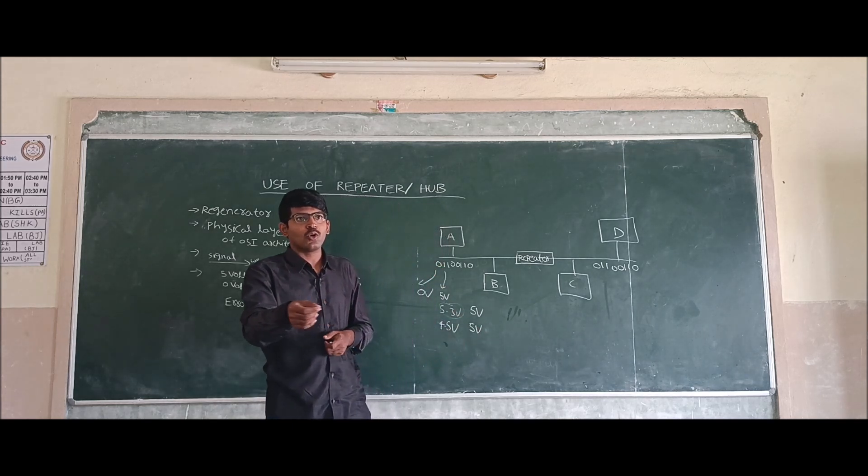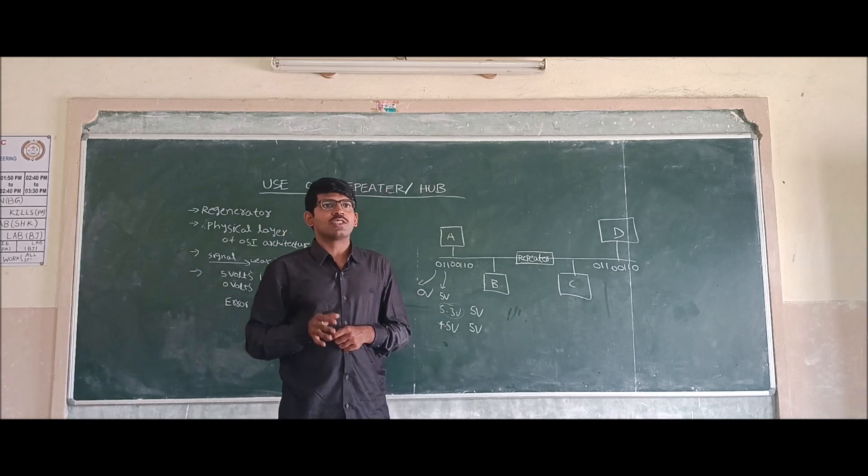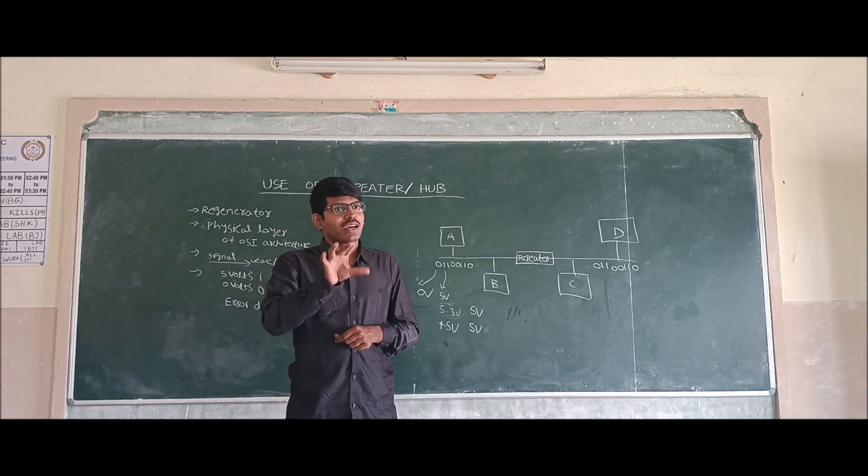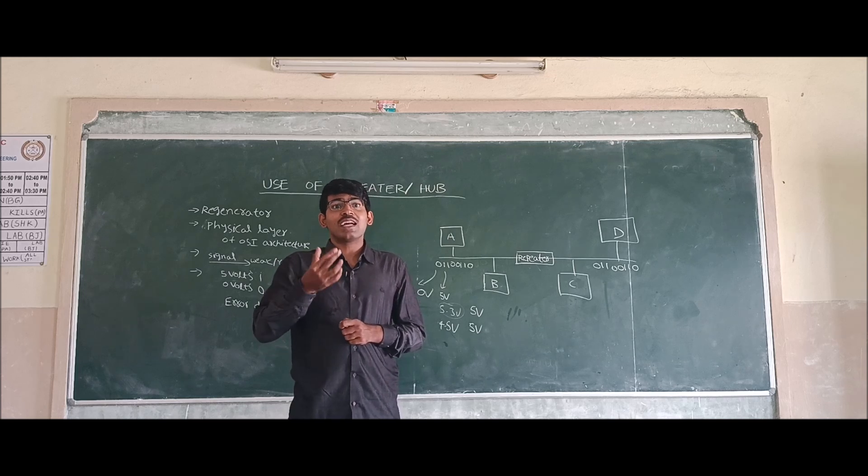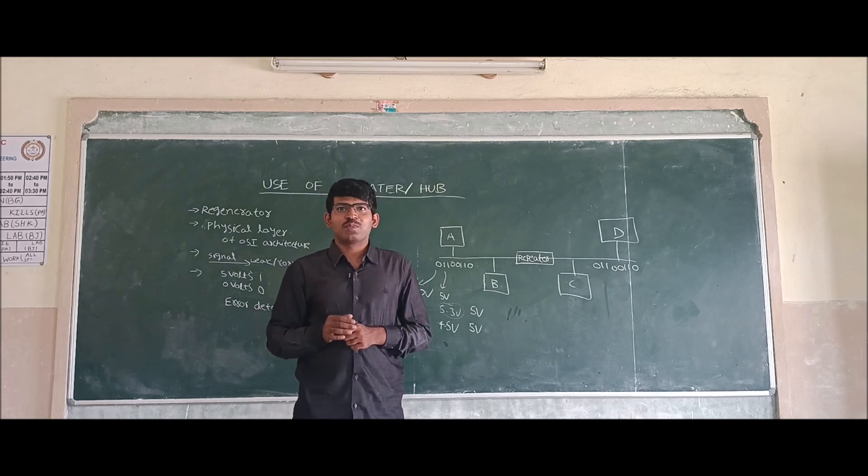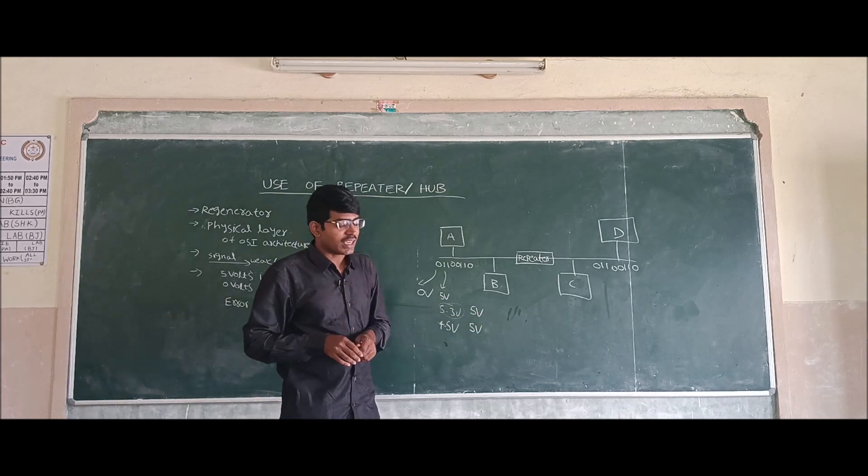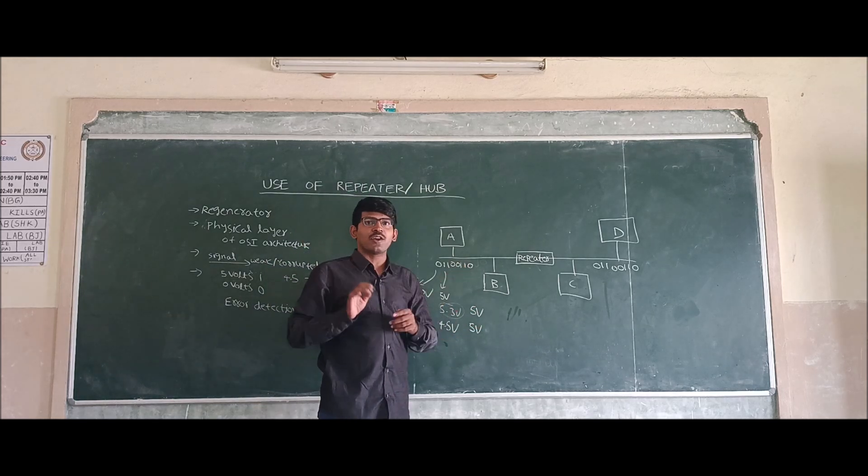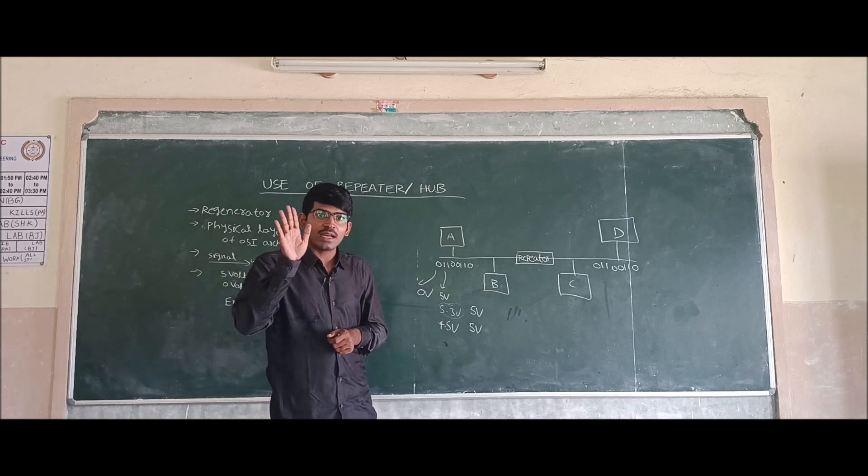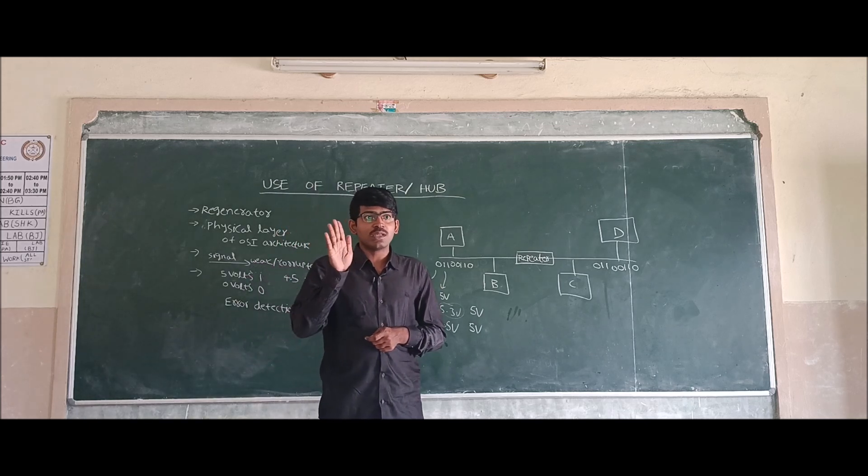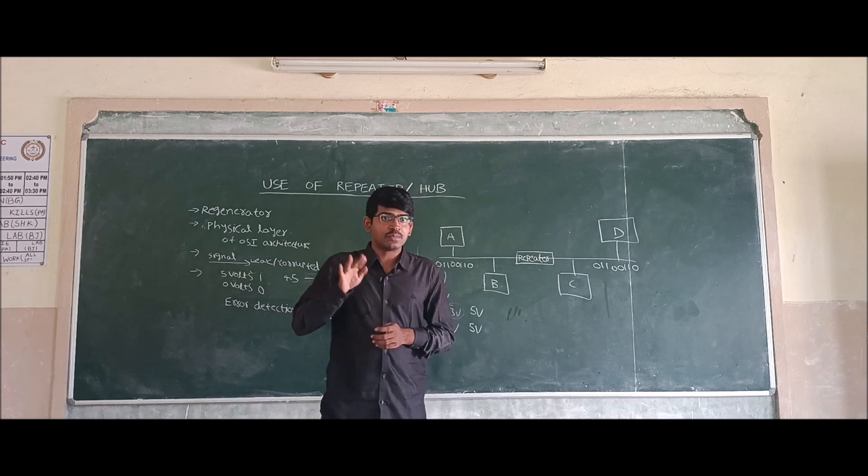It is like when small children talk - we know the words are not correct, but we understand what they're trying to say. That's how the repeater is an intelligent device. Even though the signal is 4.5 volts, the repeater understands that it means a 5 volt signal.